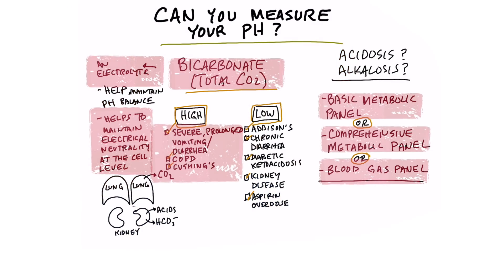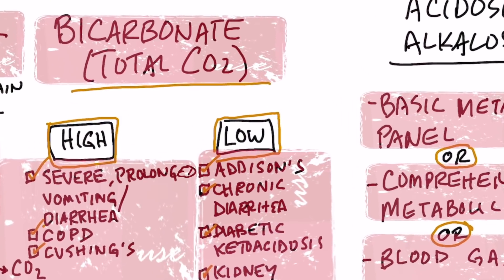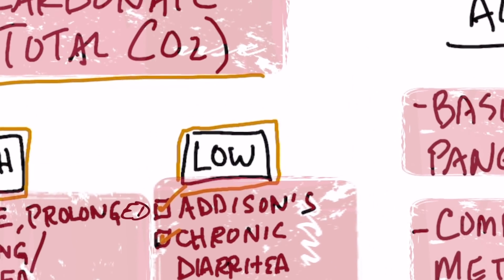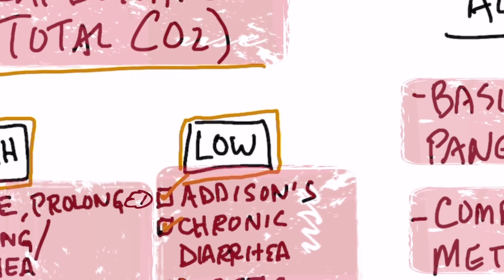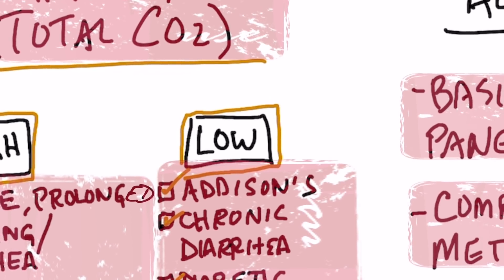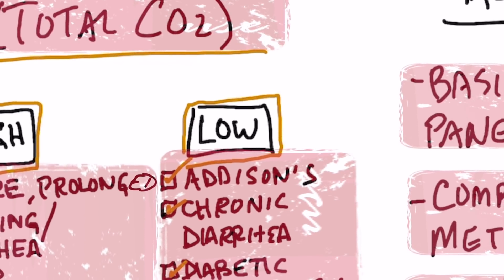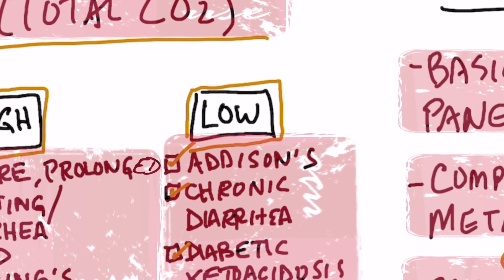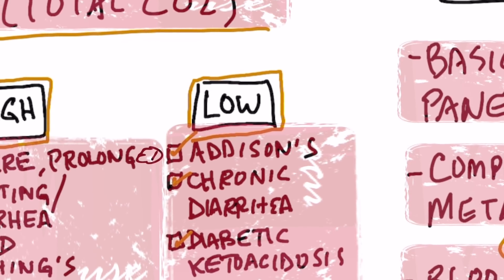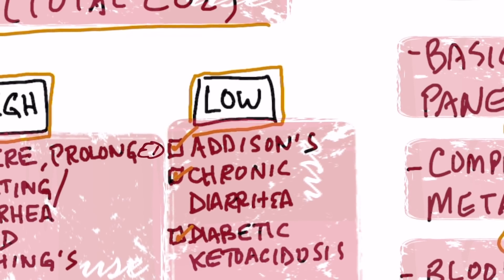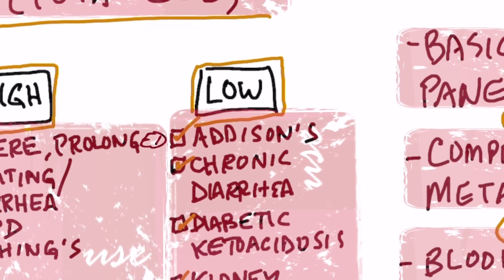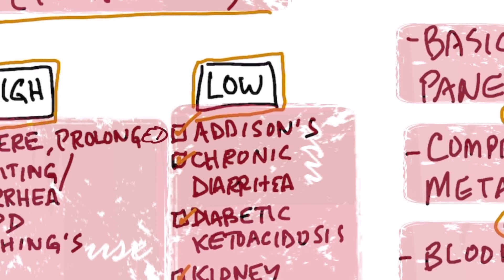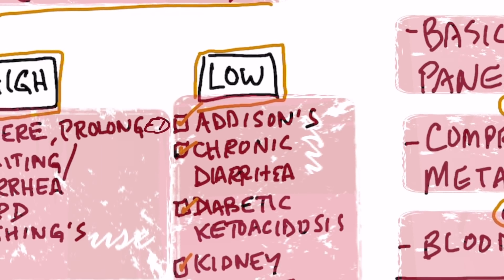Now, if your bicarbonates are low, that happens in Addison's disease, which is an adrenal problem where you don't have enough adrenal hormones — you've basically run out of adrenal hormones. It can also occur with chronic diarrhea. Interestingly, with chronic diarrhea you can have either high or low bicarbonates, depending on other factors.